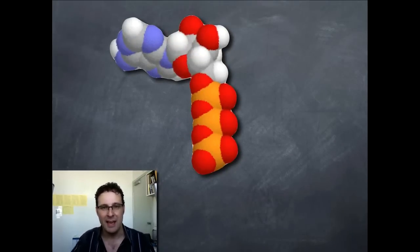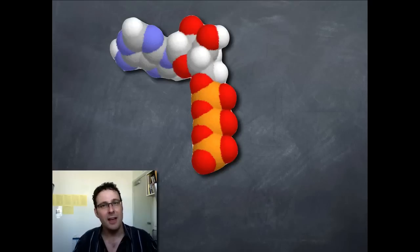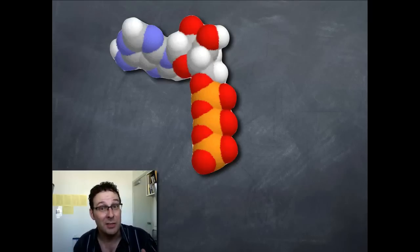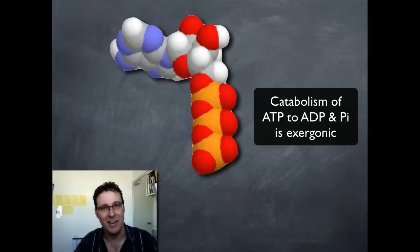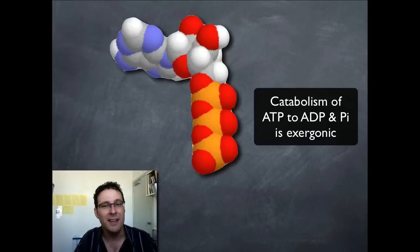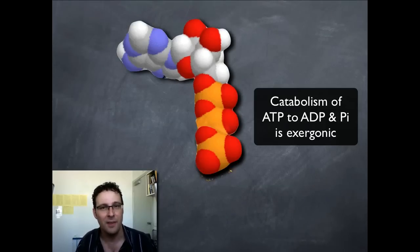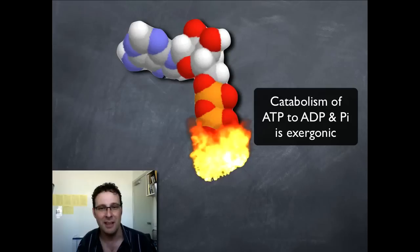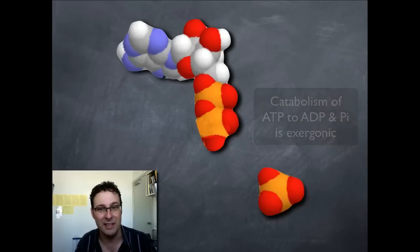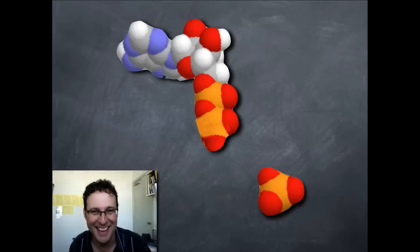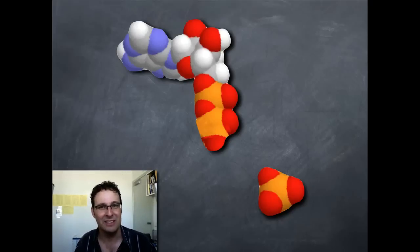ATP has three phosphates. If you've got a big molecule like that and you break it apart, that would be a catabolic reaction, and all catabolic reactions are exergonic — they release energy. So if we were to break the third phosphate off this ATP, energy will be released — not as fire, but as energy — and that can be used by something in the cell.